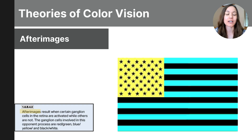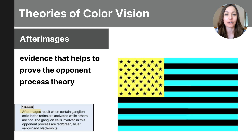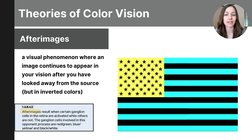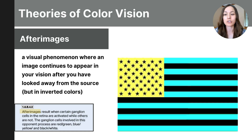The afterimage effect is evidence that helps prove the opponent process theory — it shows us that the brain processes colors in opposing pairs. When you tire out one color like red, its opposing channel, green, becomes more noticeable when you look away. The afterimage effect is the visual phenomenon where an image continues to appear in your vision after you've looked away from it, but in its inverted colors. You can test this with the flag on the screen: stare at the flag colored in yellow, blue, and black. Set a timer for 30 seconds and stare into the flag until the timer goes off, then shut your eyes or shift your gaze onto a blank wall. The blue-yellow channel will tire of sending yellow, and after you shift your gaze, yellow will be replaced with its opposing color blue, and the blue and black stripes will be replaced with red and white stripes. Go ahead and pause the video to try this out.